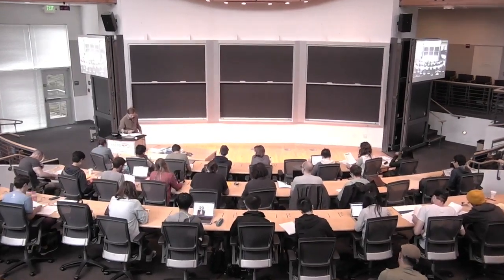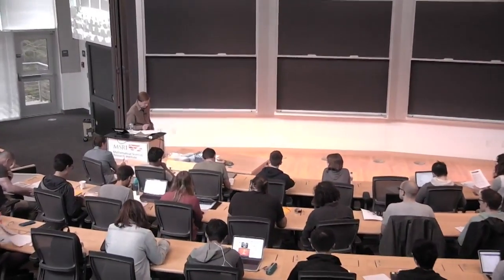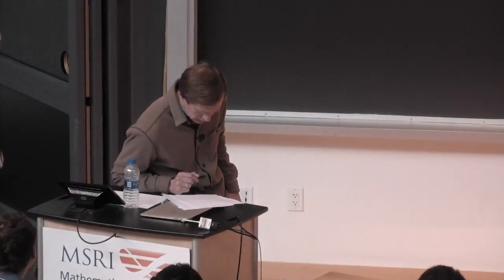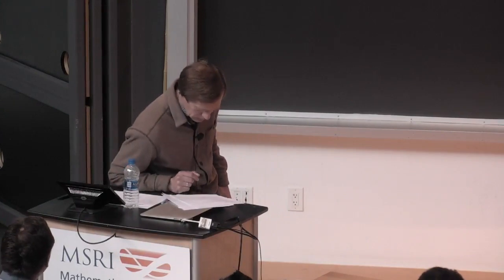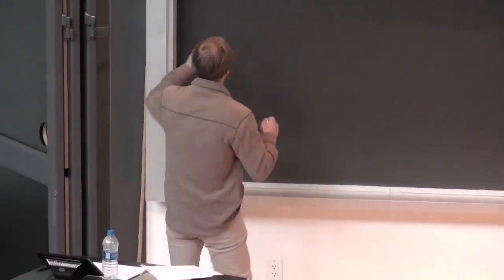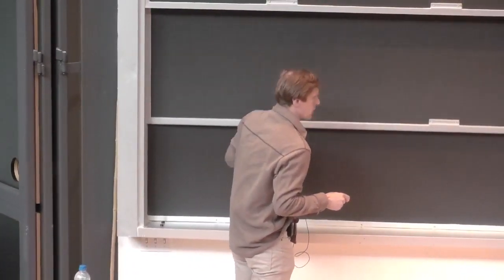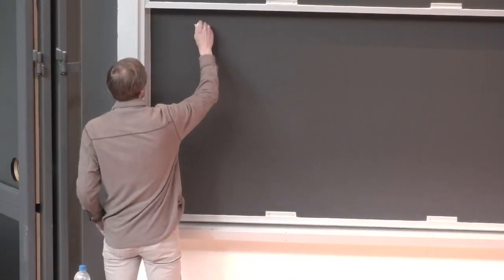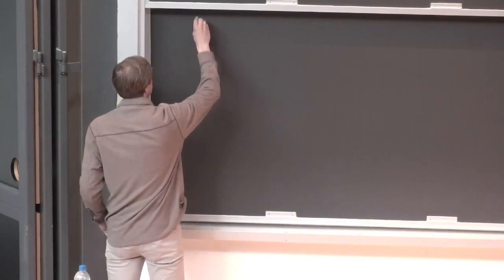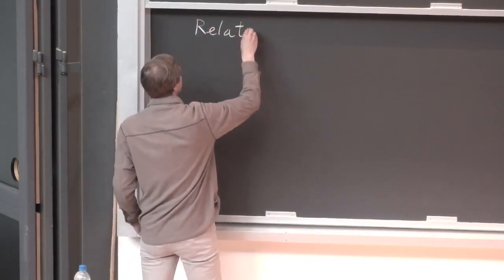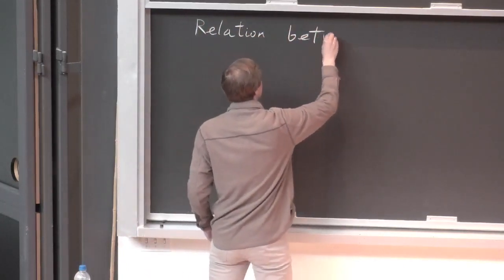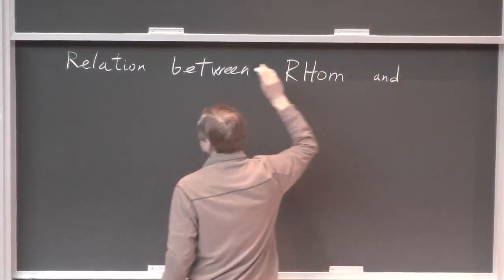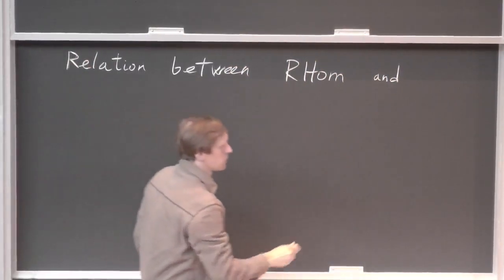My goal is to talk about Serre duality in the context of derived categories, but I want to start with one point which maybe came up a bit but we didn't emphasize it properly. It's a relation between morphisms and derived categories — a relation between RHom and morphisms in the derived category. It's quite an abstract point.